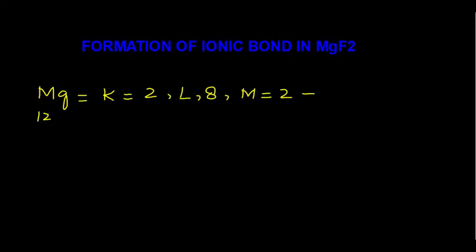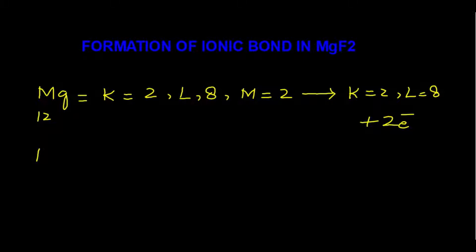Magnesium will lose 2 electrons from the M shell and become stable. After the loss of 2 electrons, the electronic configuration of magnesium would be: K shell — 2 electrons, L shell — 8 electrons. Now L becomes the valence shell of magnesium, and its octet is completed. It becomes stable because its electronic configuration in the valence shell is similar to a noble gas.